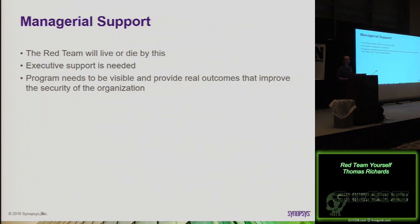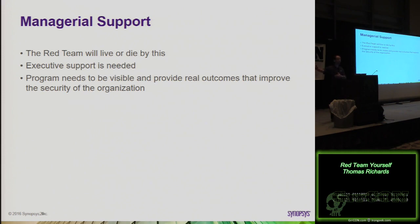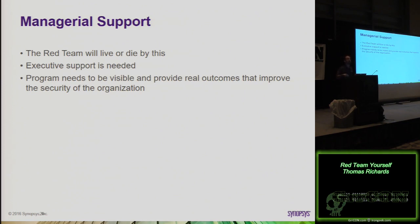Managerial support — as I mentioned, you'll live or die by this. You need C-suite executive-level support to carry out this kind of testing and have the authority to issue and okay any test you're doing. The program also needs to be visible — you need a seat at the table to show what you've found and how you've improved. Executives like metrics and graphs and numbers: how many vulnerabilities did we find, how bad were they, have we improved over the next year? Metric collecting is important, and that's what allows the manager to show the team is positively impacting the organization.